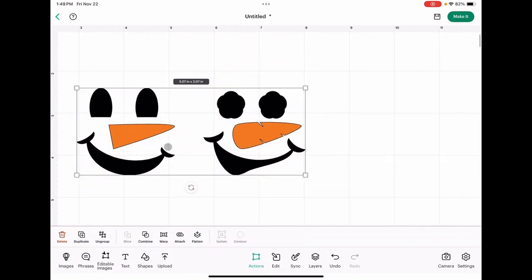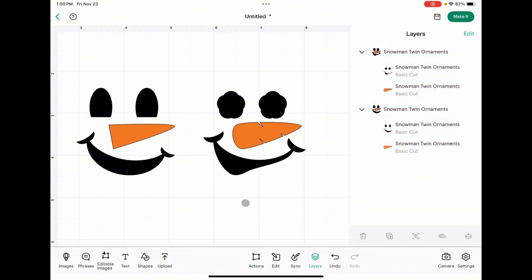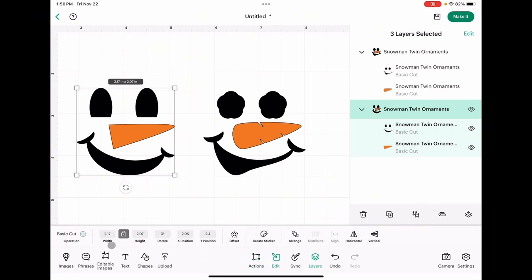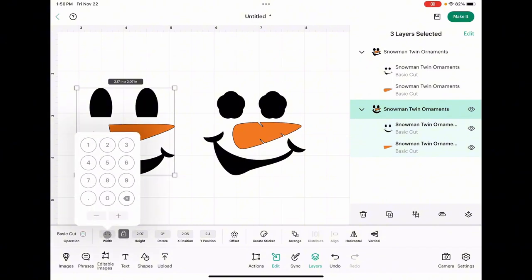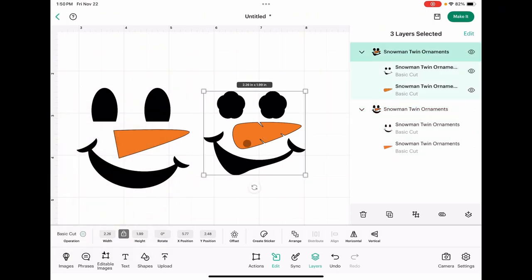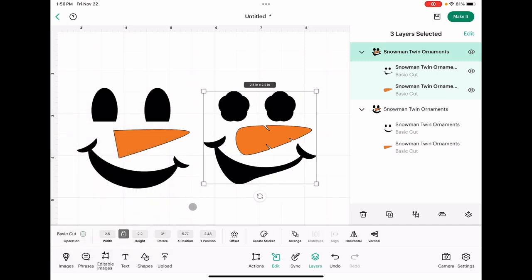So the first thing we need to do is ungroup these two images. And now we want to make sure that they are no more than two and a half inches wide. So I will highlight this first one, come over to edit. And with the height and width aspect ratio locked, I'm going to go ahead and change this to 2.5 inches. And then I will do the same for this one. And there we go.